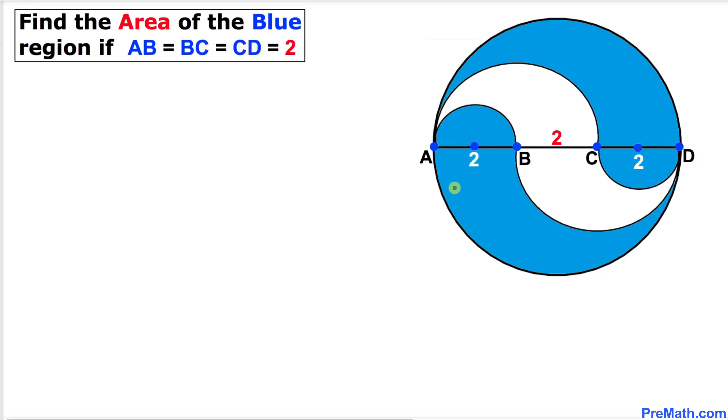Welcome to Premath. In this video tutorial we have a big circle whose diameter is 80 that contains three identical semicircles of different sizes as you can see in this figure. Moreover, these distances A, B,